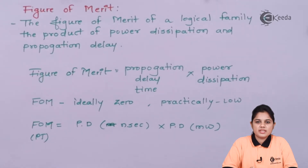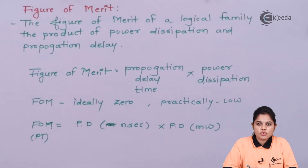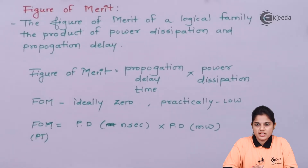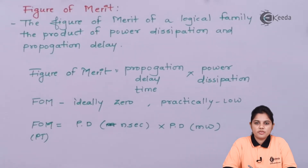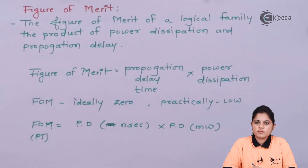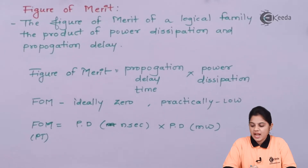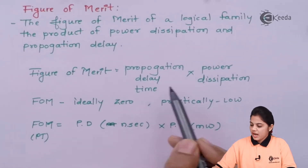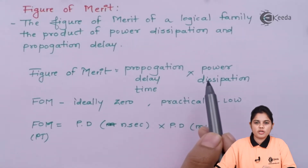The third characteristic is figure of merit. Whenever you take any circuit or device, you check its efficiency — how the output comes when input is processed through the device. As input goes through many stages of the device, it can get affected by certain parameters such as power dissipation and propagation delay. These two parameters should be as low as possible, because the figure of merit is defined as the product of propagation delay time and power dissipation. These two parameters are equally important to determine the figure of merit.